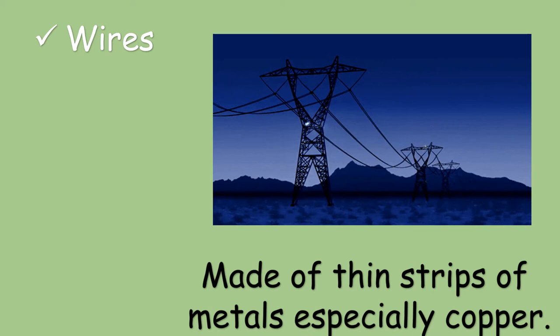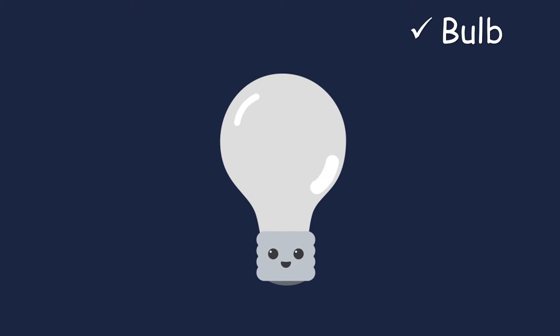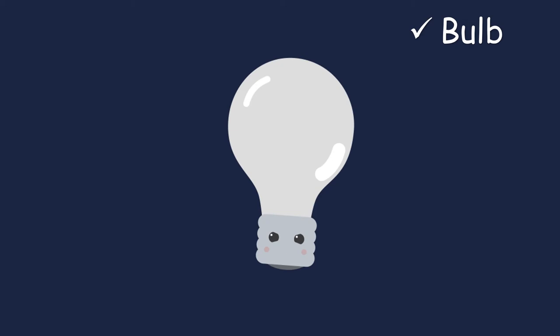And last but not the least, we have the bulb. It produces light and heat. In order for the bulb to light up, it has to be properly connected in a circuit.